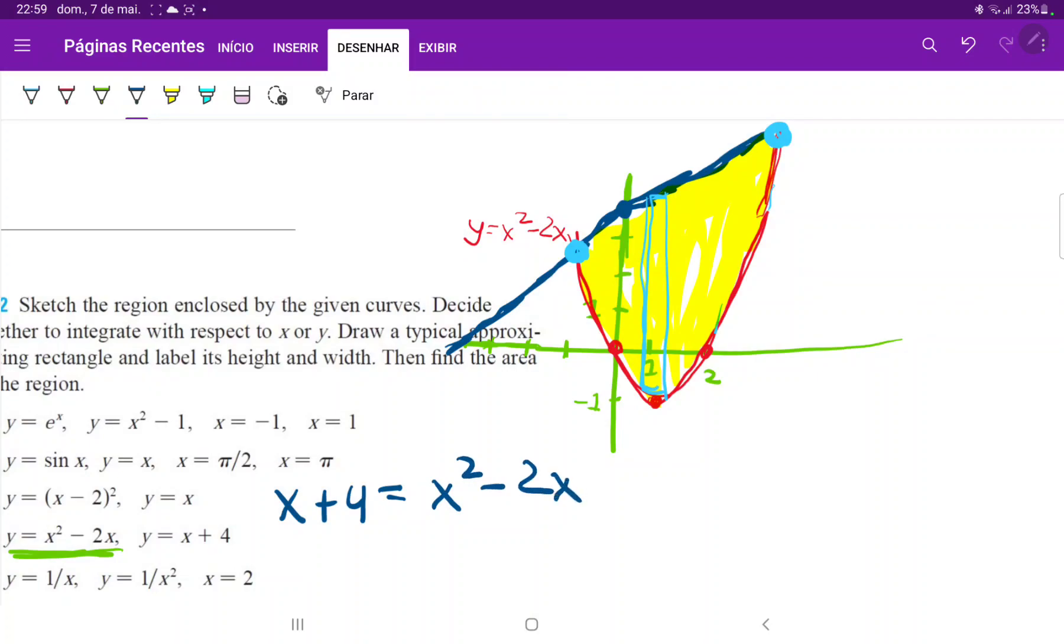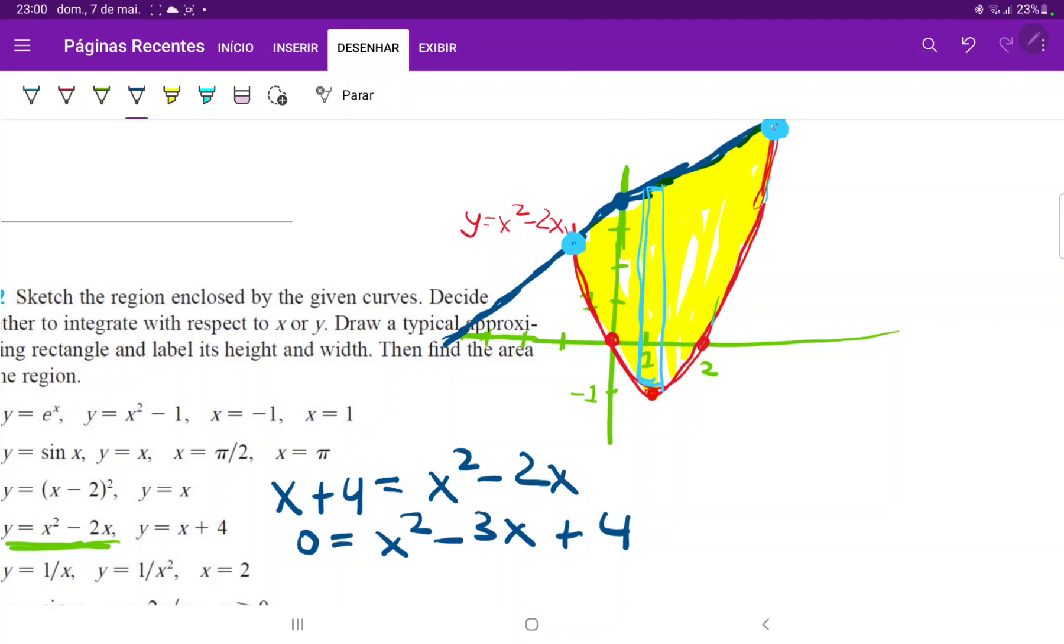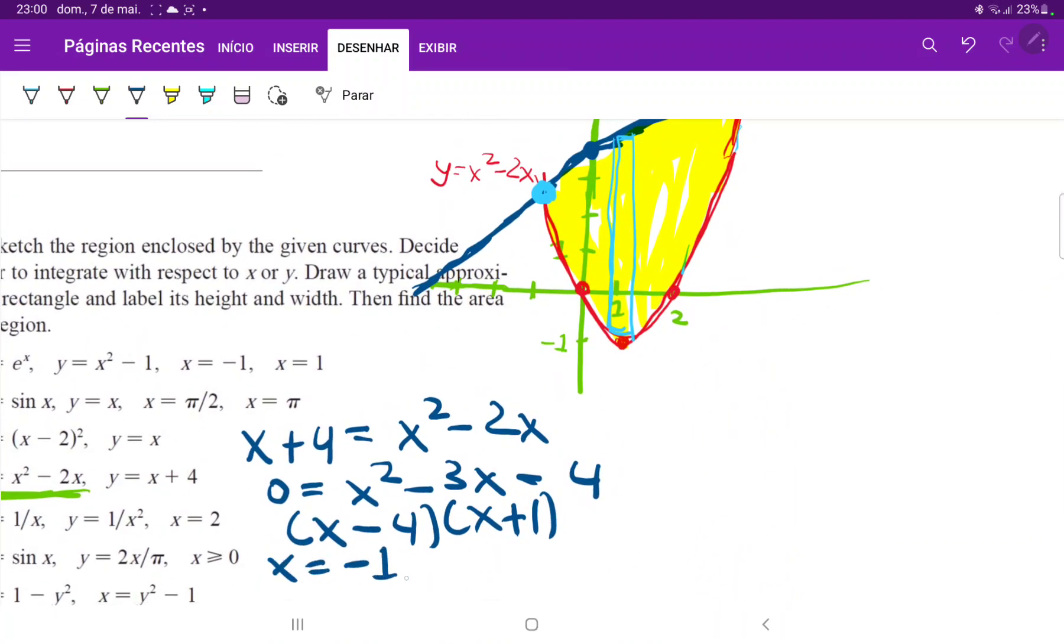So, I'm just going to bring everything to the right. So, I have 0 is equal to x squared minus 2x minus x. That gives me minus 3x and then minus 4. Thankfully, this factors very easily because it factors into minus 4 and plus 1 because it multiplies to minus 4 and it adds to negative 3. So, we have x minus 4 times x plus 1. So, our x's are at x is equal to negative 1 and x is equal to 4.